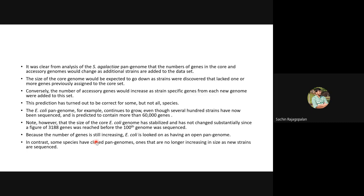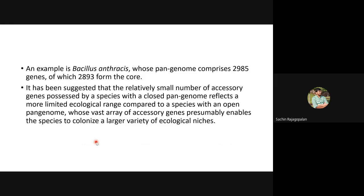For some species, the pangenome itself is closed — neither the core genome nor the accessory genome changes in size. Bacillus anthracis is an example: its pangenome is 2,985 genes, of which 2,893 form the core genome, with only about 92 accessory genes. The pangenome is totally closed and stabilized — no additions or deletions — because this organism has fully adapted to its ecological niche and is limited to a specific ecological range.